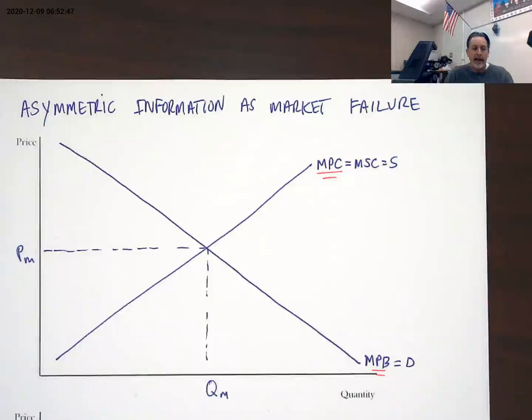Asymmetric information enters as a market failure when we have informed versus uninformed demand.